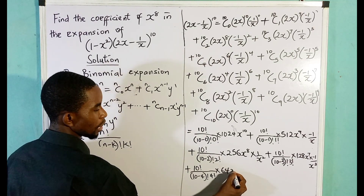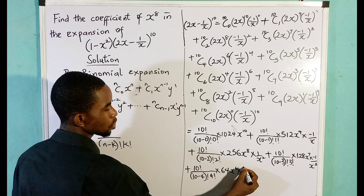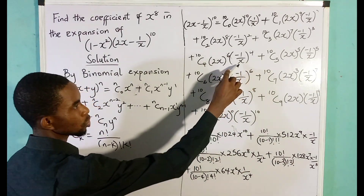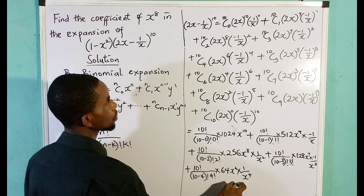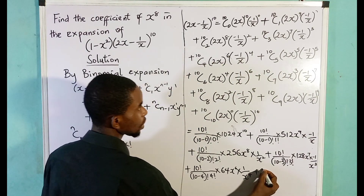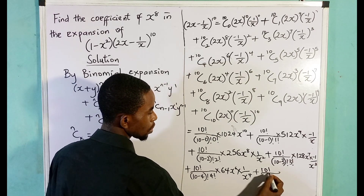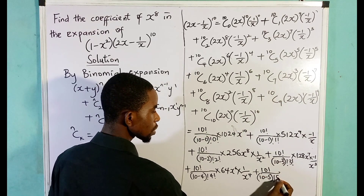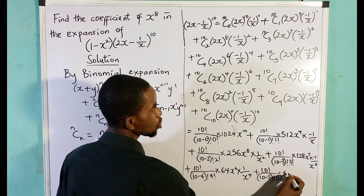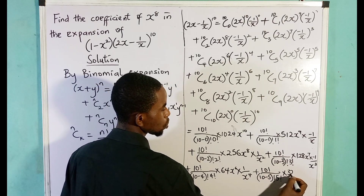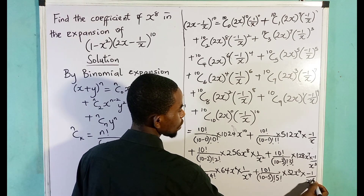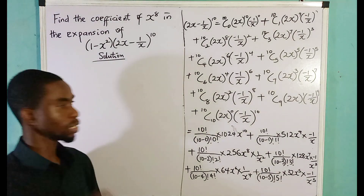Plus 10 combination 4 = 10! / (6! × 4!) times 2^6 = 64, so 64x^6, times 1/x^4. The even power means the negative goes away. Plus 10 combination 5 = 10! / (5! × 5!) times 2^5 = 32, giving 32x^5, times (minus 1/x^5).